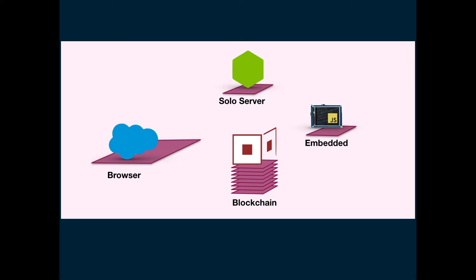Agoric is supporting JavaScript on blockchain, and we've been working with MetaMask. MetaMask, also on the browser, is a platform that people use to write user interfaces for interacting with distributed apps and smart contracts on blockchains. They've been using Browserify as their module system, and they are now switching from Browserify to SESify — a version of Browserify that has SES built in.